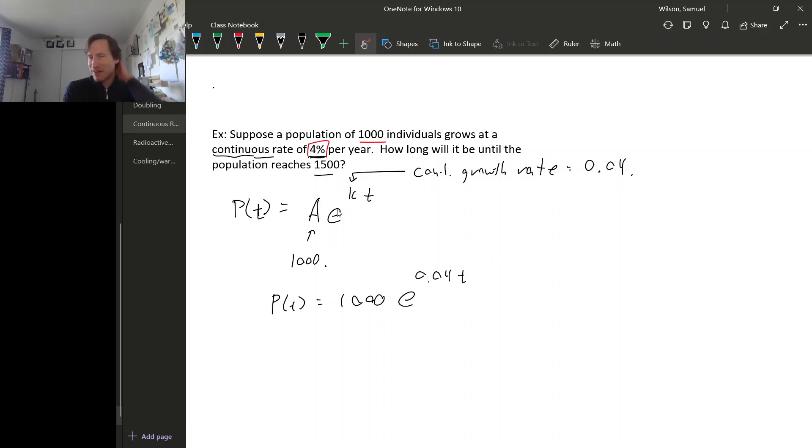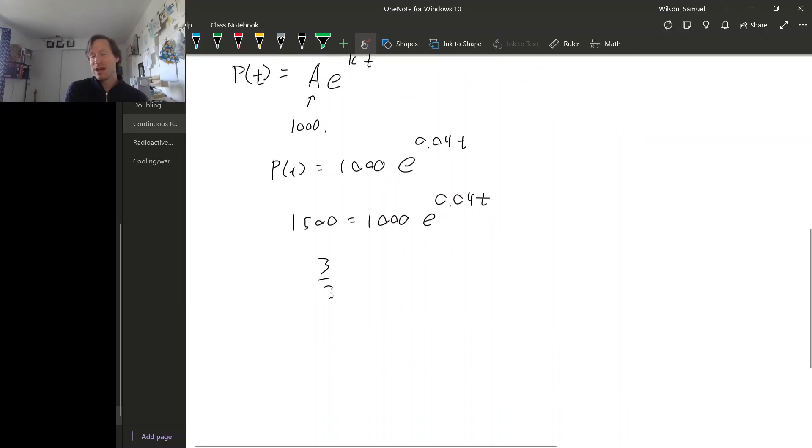And now that we have this function we can answer the question of when does it get to 1,500. We can just set this equal to 1,500. 1,500 equals 1,000 e to the 0.04 t, and then solve for t. So divide both sides by 1,000, we're going to get 3 halves equals e to the 0.04 t. And then take natural log on both sides. Natural log 3 halves equals, on the right hand side, the natural log of this is just 0.04 t. And then divide by 0.04. So t is natural log of 3 halves over 0.04. Natural log of 3 halves divided by 0.04, and I get 10.14 approximately, years.